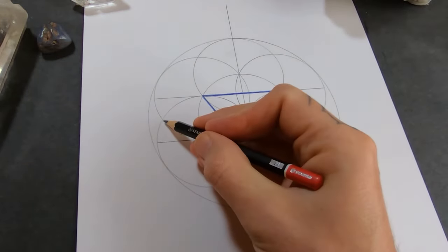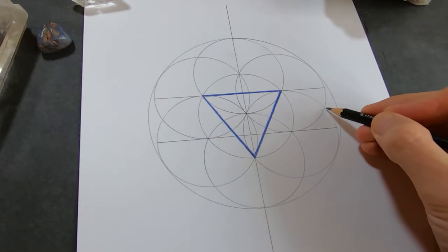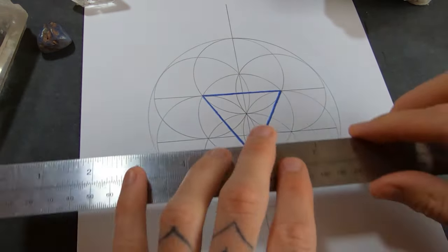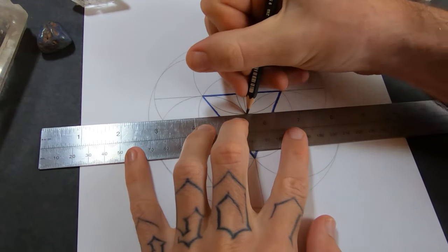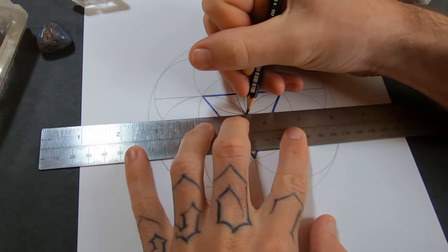Now I'm going to use this point and this point where these circles cross to find the horizontal line. This will be 90 degrees from the vertical line.